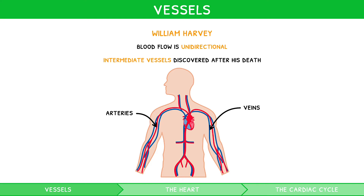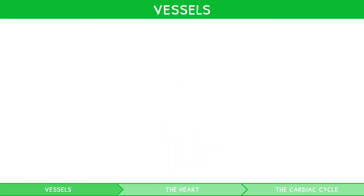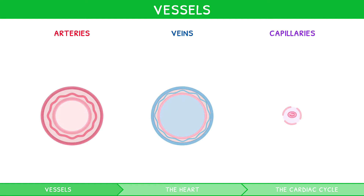There are three main types of blood vessels you need to know for your exam: arteries, veins, and capillaries. You are expected to draw a cross-section and list the features of each. Let's take a look.